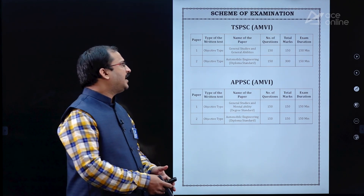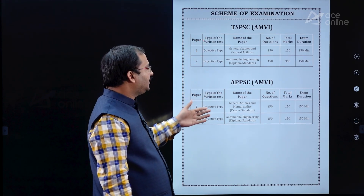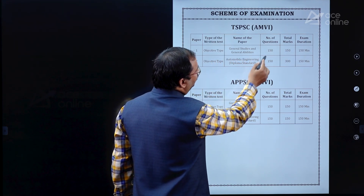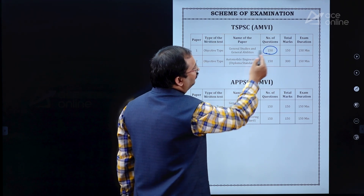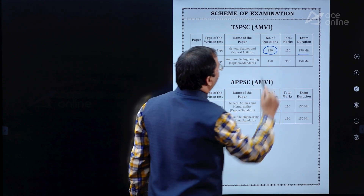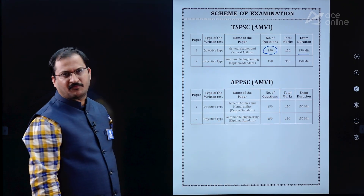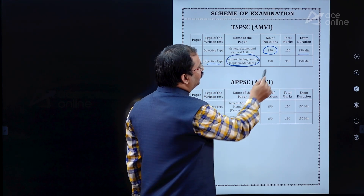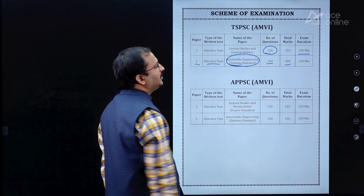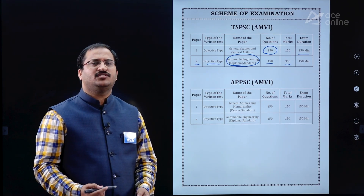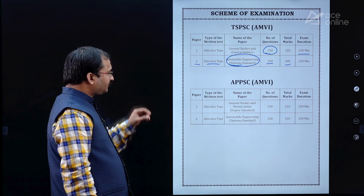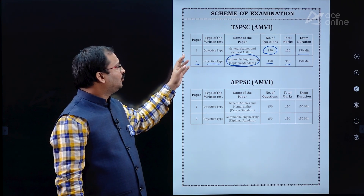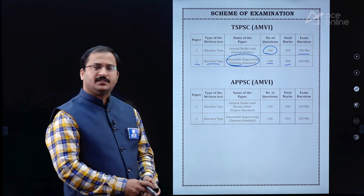The pattern and scheme of the examination for TSPSC and APPSC are shown here. In TSPSC, Paper 1 is General Studies and General Abilities — 150 marks, 150 questions, 150 minutes. Paper 2 is objective type Automobile Engineering at diploma standard — 150 questions, 300 marks, 150 minutes. The book we are discussing is for Paper 2.